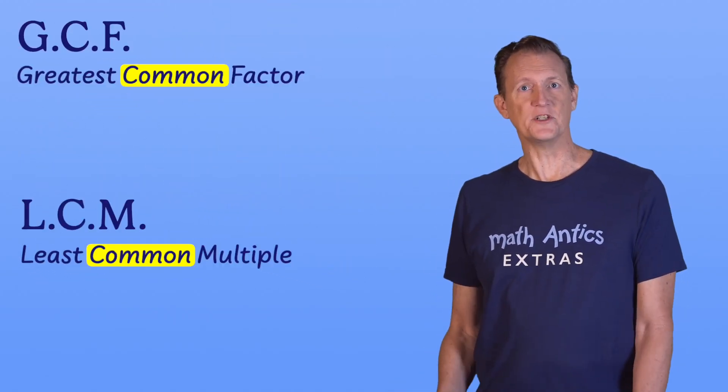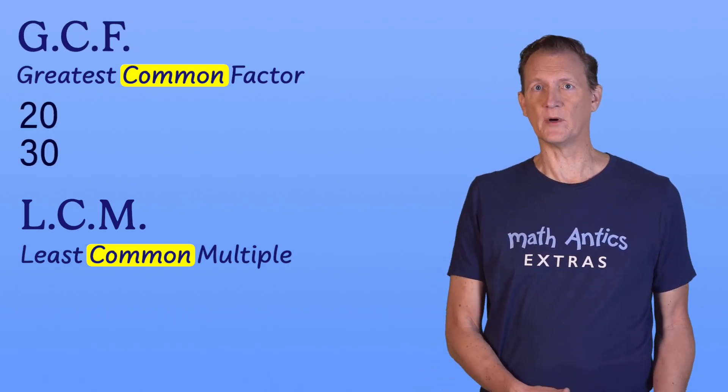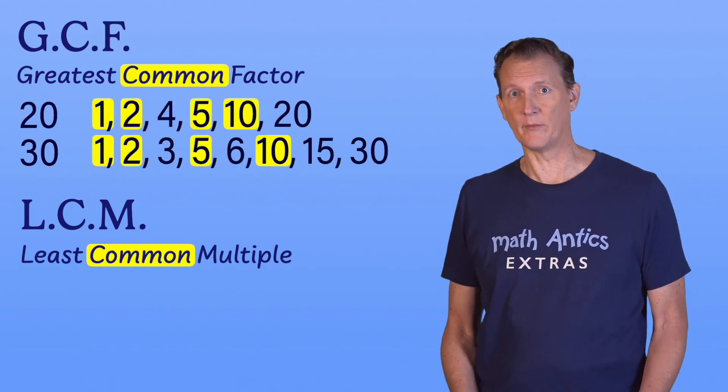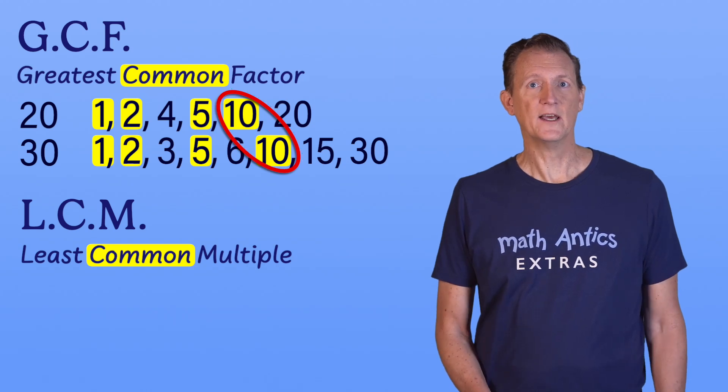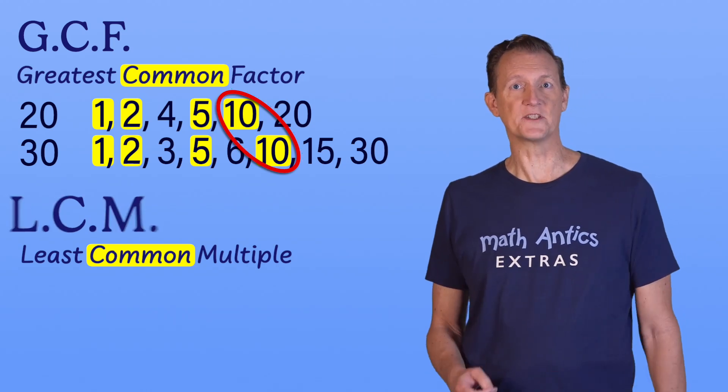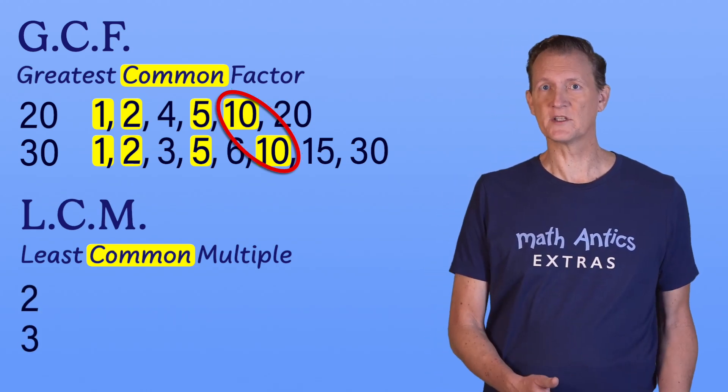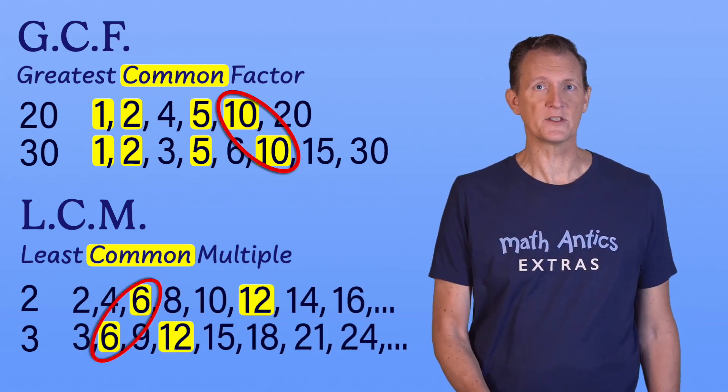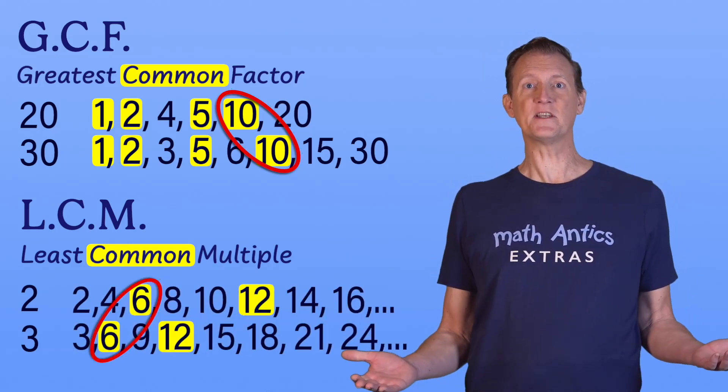To get the Greatest Common Factor, or GCF, you take two or more numbers, find the factors that they have in common, and pick the greatest one. To get the Least Common Multiple, or LCM, you take two or more numbers, find the multiples that they have in common, and pick the smallest or least one. Sounds pretty simple, right?